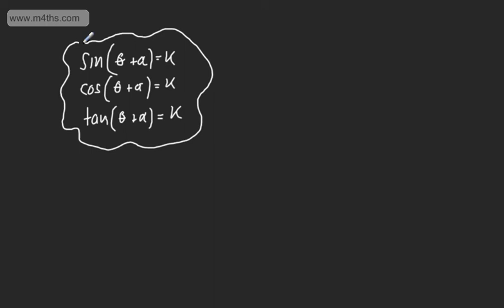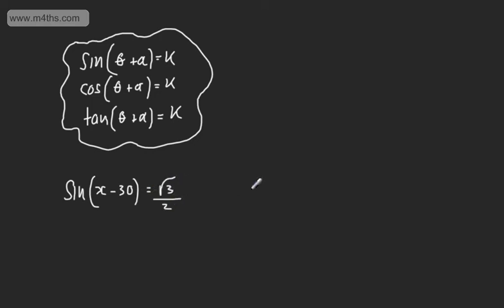In this video, we're just going to work through basic examples, and then in later videos when we bring all the skills together, we'll look at more challenging ones. So let's look at sine of x minus 30 degrees equal to root 3 over 2, where x is in the interval from 0 to 360 degrees.